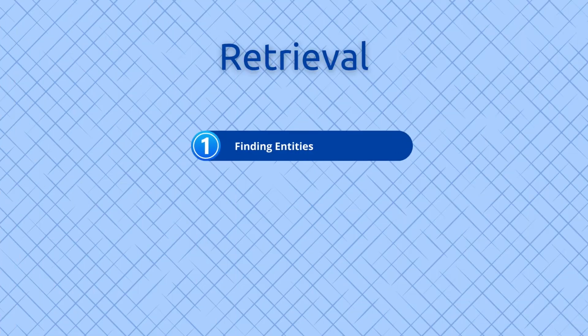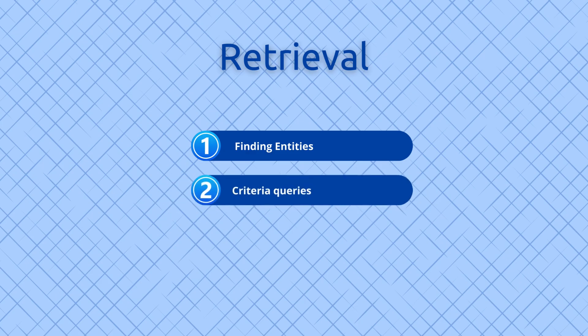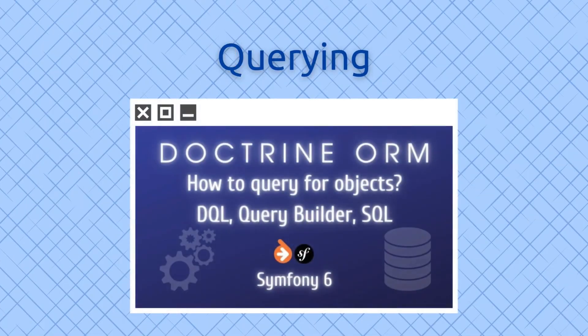Retrieval — finding entities: You use methods like find() to retrieve specific entities by their primary key. Criteria queries: you can use the Entity Manager to create more complex queries based on various criteria. For complex queries you can use the Query Builder, which provides a fluent interface for programmatically building SQL queries. Alternatively, you can use DQL — Doctrine Query Language — a SQL-like language for querying objects directly.